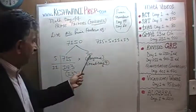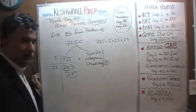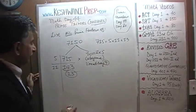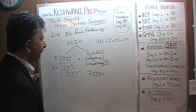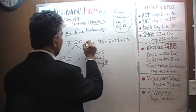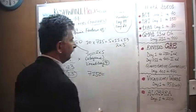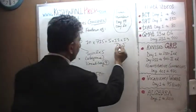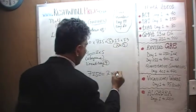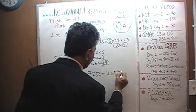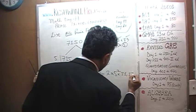Well, later is now. 10 has prime factors of 2 and 5. So 7,150 can be written using the factors of 10: that gives us a 2 and a 5. We have a 2, and then two 5s — so 5 squared. Then we have 11 and 13.